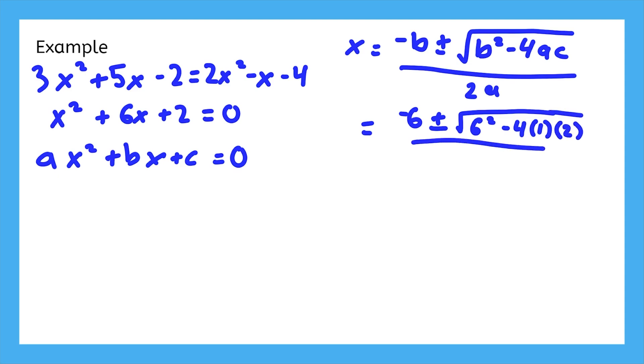You replace the variables with their values, and we're well on our way to a couple of solutions. 6 squared is 36, negative 4 times 1 times 2 is negative 8, and 2 times 1 is 2. 36 minus 8 is 28, which is not a perfect square, so we're going to need to simplify it.